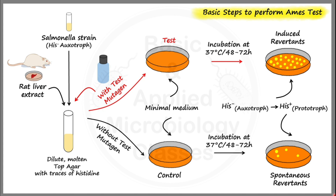A few additional points: top agar has a lesser concentration of agar compared to the bottom agar poured in petri plates. Regarding the small amount of histidine added to the top agar — this serves two functions. First, it helps the bacteria survive during the initial few hours of contact with the test mutagen. Second, some test mutagens can only act on replicating bacteria, so traces of histidine help initiate the bacterial replication cycle by providing an essential nutrient.